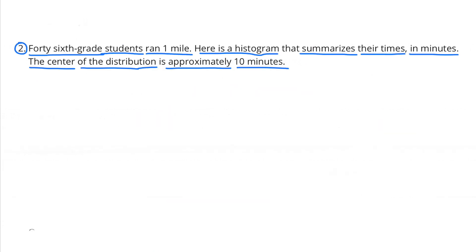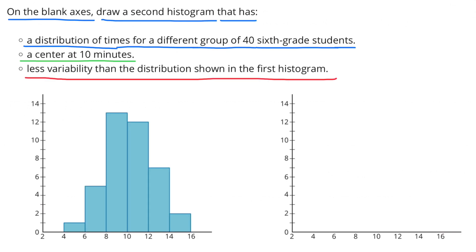Number 2: 40 6th grade students ran 1 mile. Here is a histogram that summarizes their times in minutes. The center of the distribution is approximately 10 minutes. On the blank axes, draw a second histogram that has a distribution of times for a different group of 40 6th grade students, a center at 10 minutes, and less variability than the distribution shown in the first histogram.